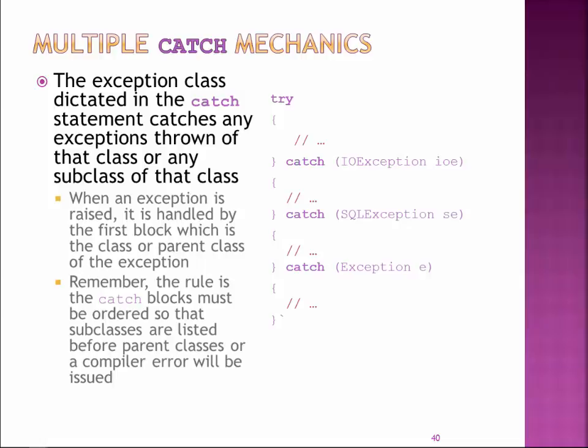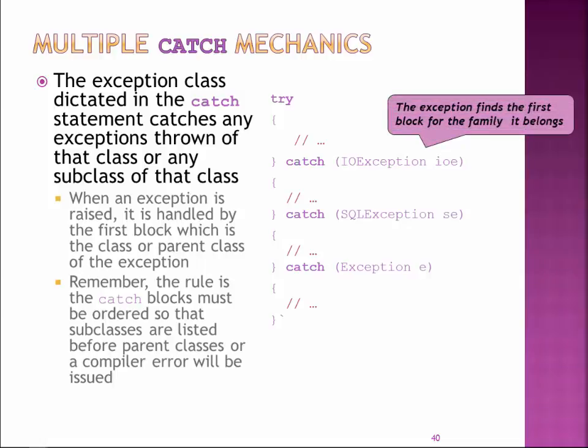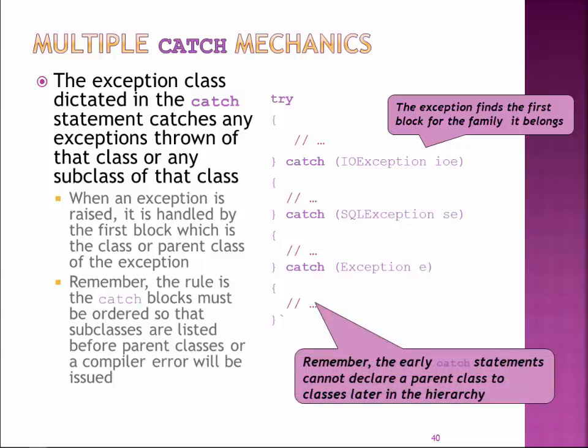Multiple catch blocks mean I jump to the first catch block whose type matches. If it's an IOException, it jumps there; if it's a SQLException, it jumps there — they're mutually exclusive. The requirement is that higher-level things in the hierarchy, like Exception, have to come last, because both IOException and SQLException are types of Exception. So the third catch handles all exceptions that are not IOException or SQL exceptions.